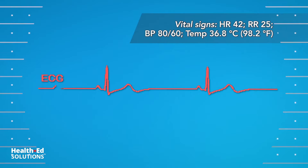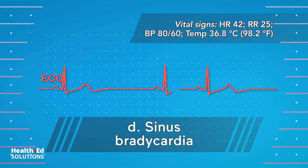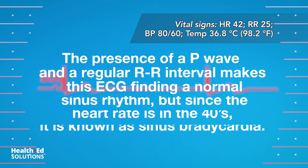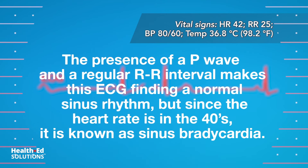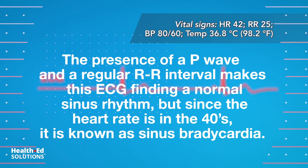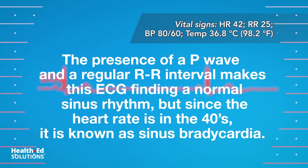Correct answer D: Sinus bradycardia. The presence of a P wave and a regular RR interval makes this ECG finding a normal sinus rhythm. But since the heart rate is in the 40s, it is known as sinus bradycardia.